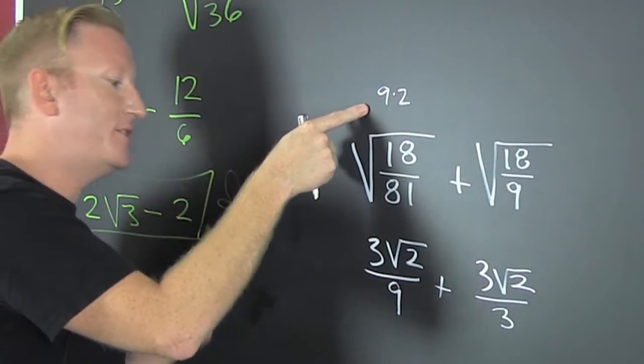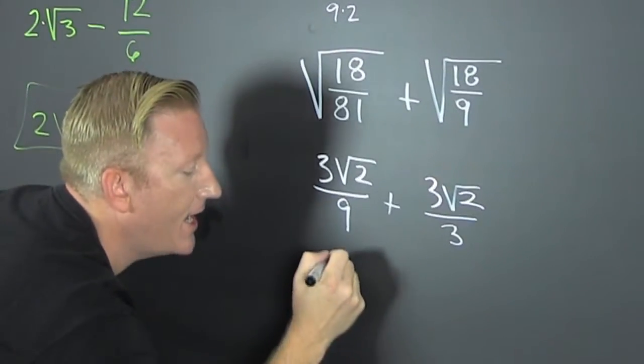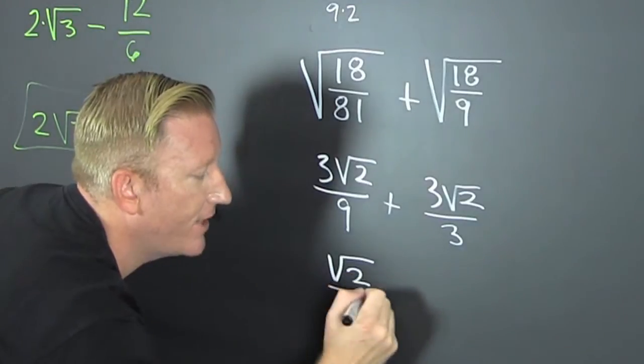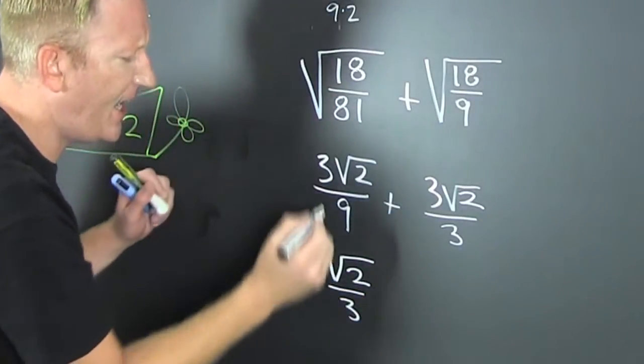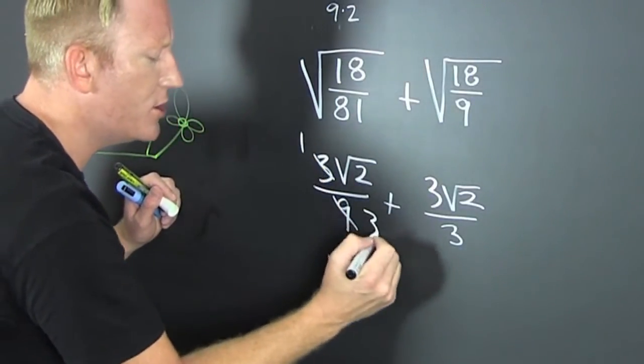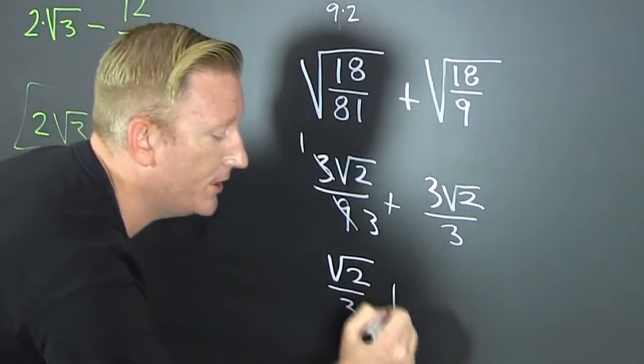We're almost done. The square root of 9 is 3, and then that's 9 times 2, so then I have the square root of 2 divided by 3.